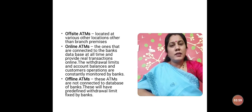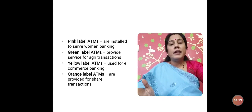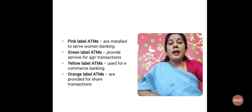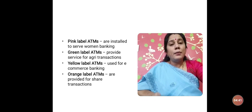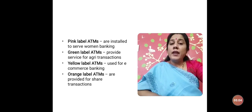There are also color-coded ATMs which provide different types of services. Pink label ATMs are installed mainly to serve women for their banking transactions, with security ensuring women safely carry on their business. Green label ATMs provide services for agri-transactions and can be found in rural sectors. Yellow label ATMs are used for e-commerce banking. Orange label ATMs are exclusively for share transactions and can be found in and around stock markets.